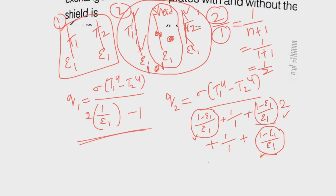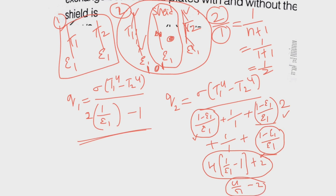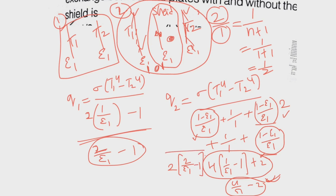These four surface resistance terms simplify to 4*(1/epsilon_1 - 1) plus 2 for the two space resistances, giving a denominator of 4/epsilon_1 - 2. Taking 2 as common: 2*(2/epsilon_1 - 1). Since the denominator for the first case is (2/epsilon_1 - 1), writing Q2 by Q1 gives 1/2. So the answer is 1/2.